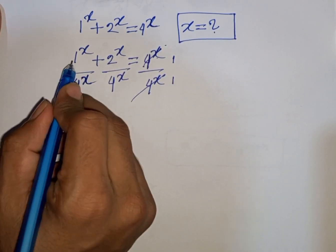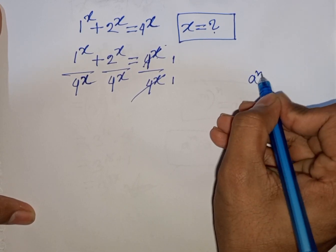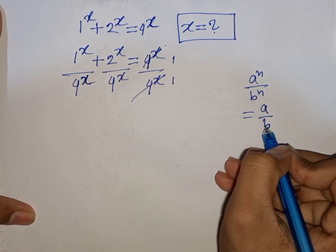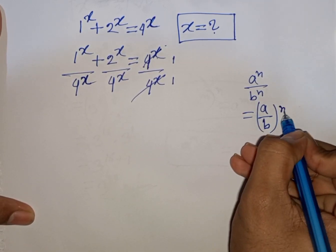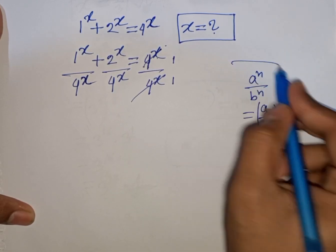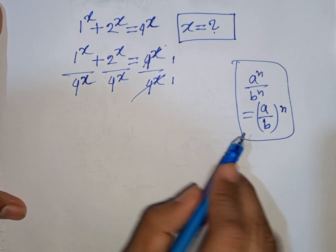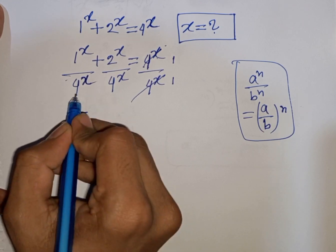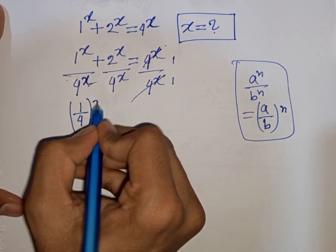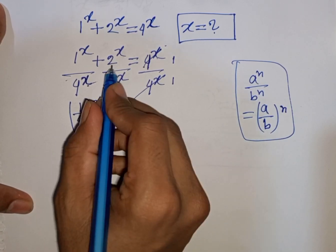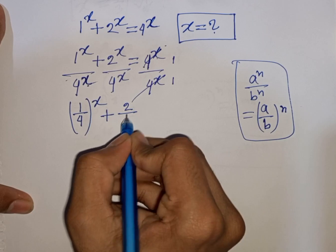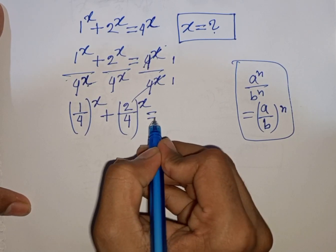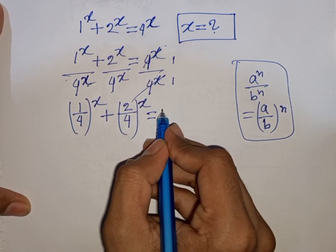Now we see same power but different base. Remember this exponential rule: a power n over b power n is equal to (a over b) power n — same power but different base. So according to this rule, 1 power x divided by 4 power x can be written as (1 over 4) power x, plus 2 power x divided by 4 power x is the same as (2 over 4) power x. That equals 1 divided by 1, which means it will be 1.